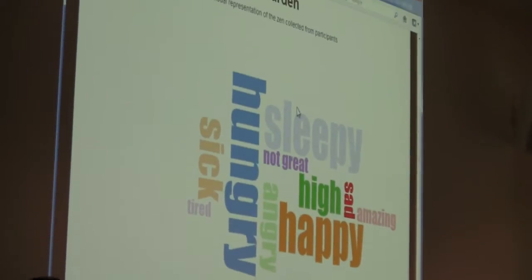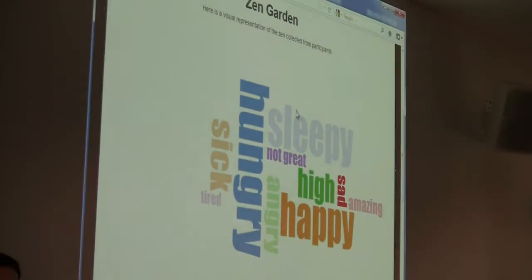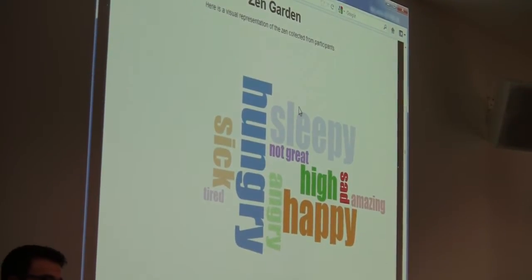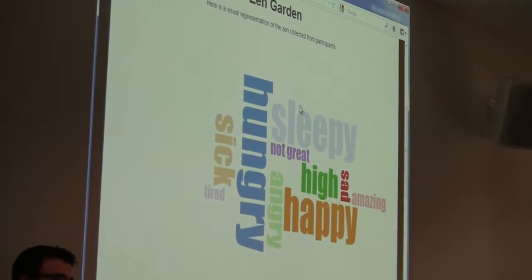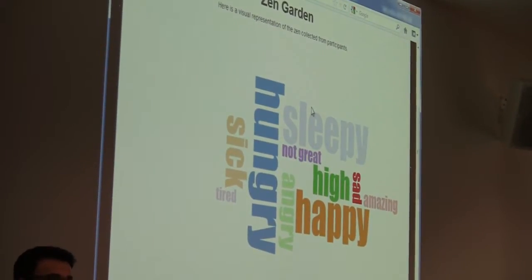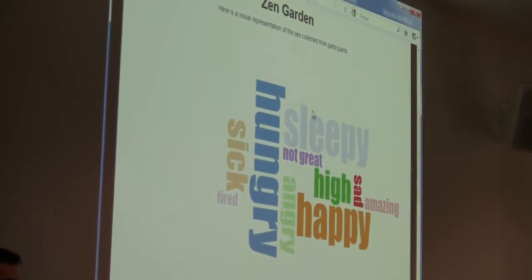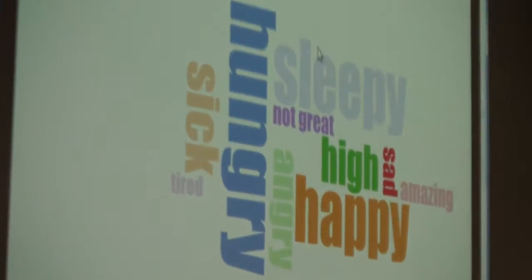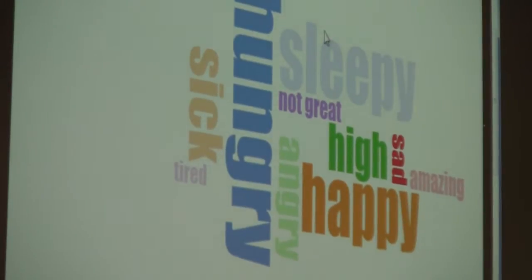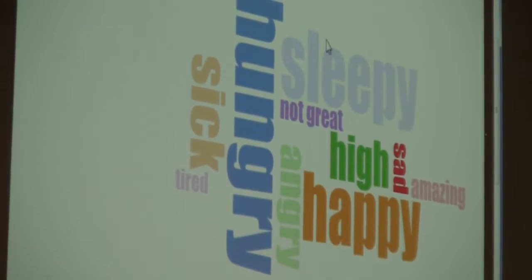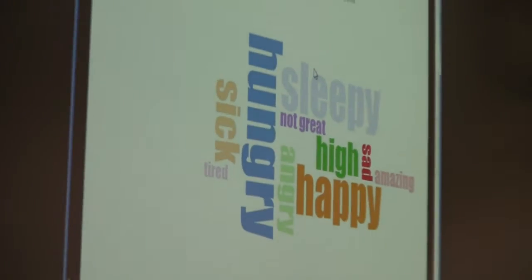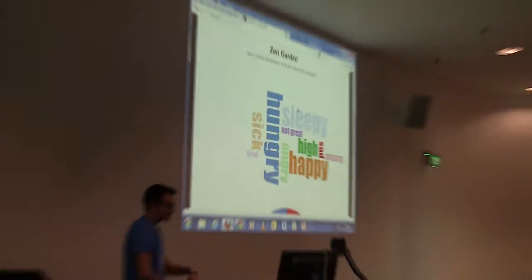Clicking View Zen brings up this page here. What we came up with is a visual representation of all the keywords coming up on the website. It's called a word cloud, so it shows all the different keywords that are popping up. These are randomized, and it's dependent on frequency as well. So if a lot of people are feeling sad, it'll pop up with a lot of sad entries. As you can see right now it's saying 'hungry', so I think we put in a lot of hungry statements before.